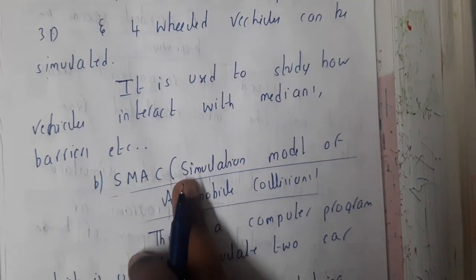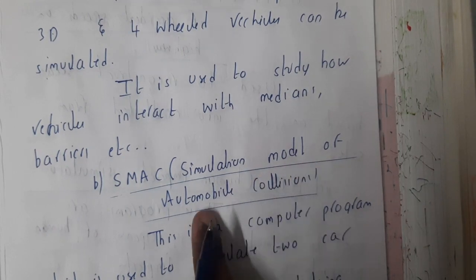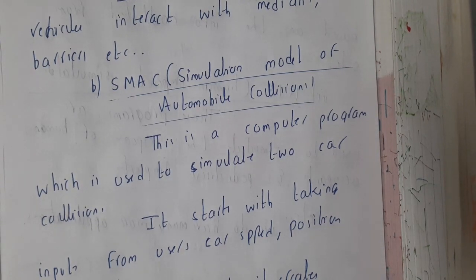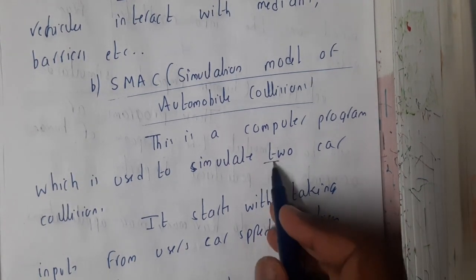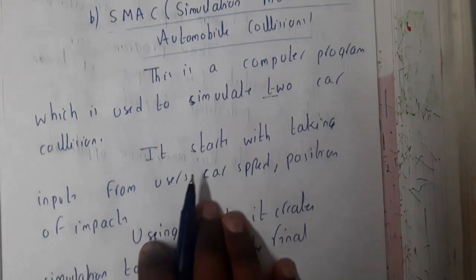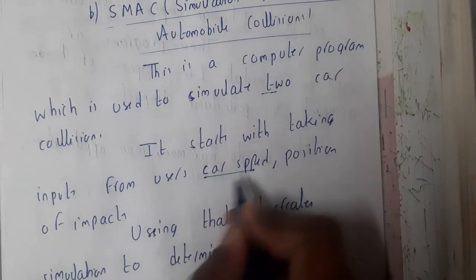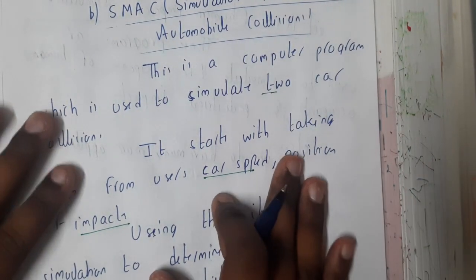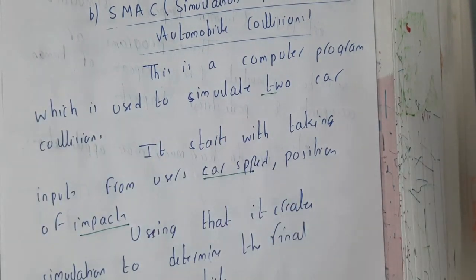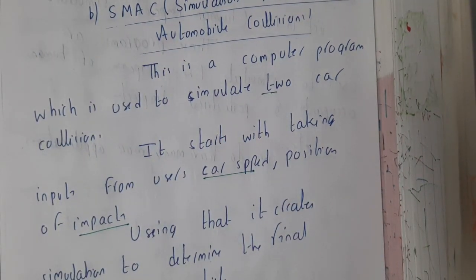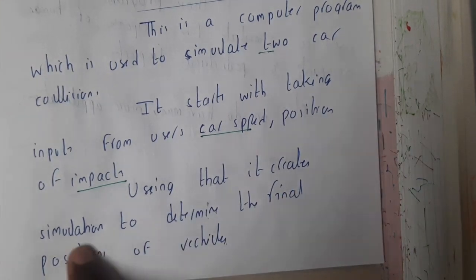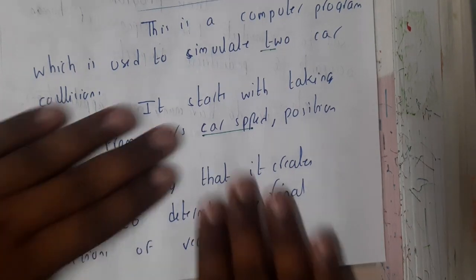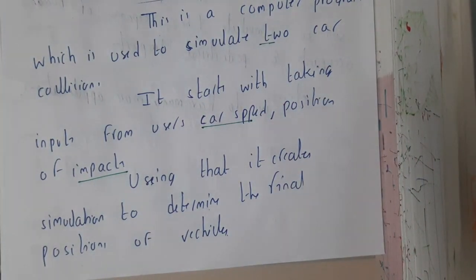Another program is SMAC — Simulation Model of Automobile Collision. This computer program simulates two-car collisions. The inputs are the car speed and position at impact — the exact speed and position before the collision — and based on these, it determines what kind of collision occurred and creates a simulation to determine the final position of each vehicle after impact.